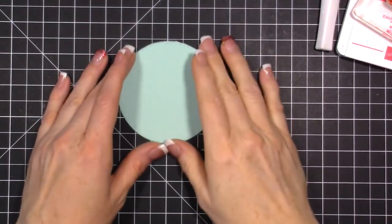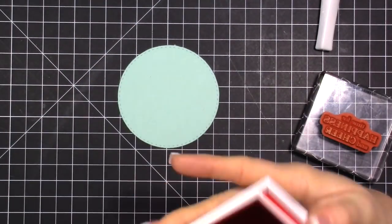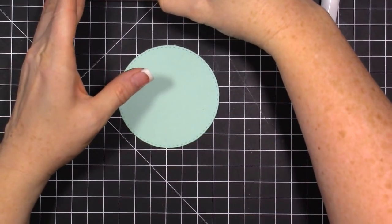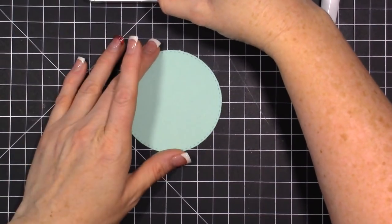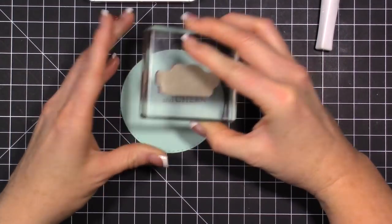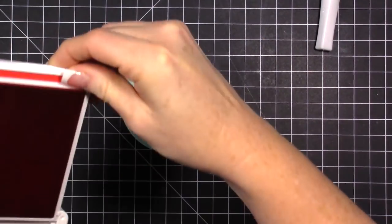I've just cut out some pool party cardstock. And then I have Poppy Parade ink. We're going to use one of the sentiments from the stamp set. Just like this. It says Time for Happiness and Cheer.